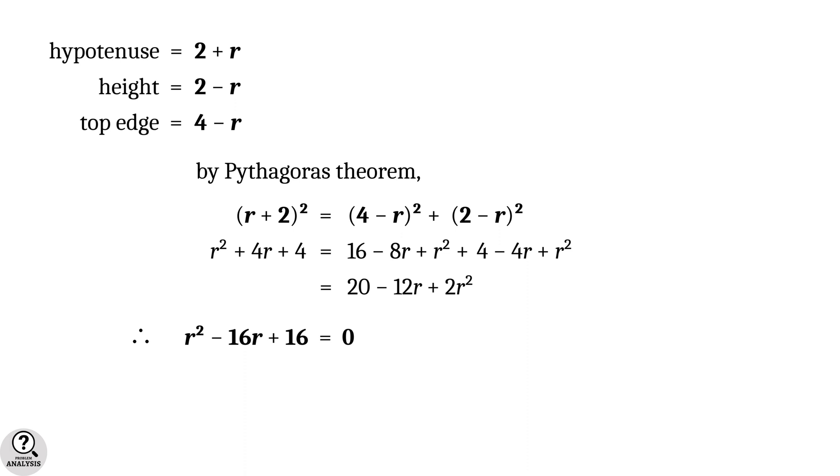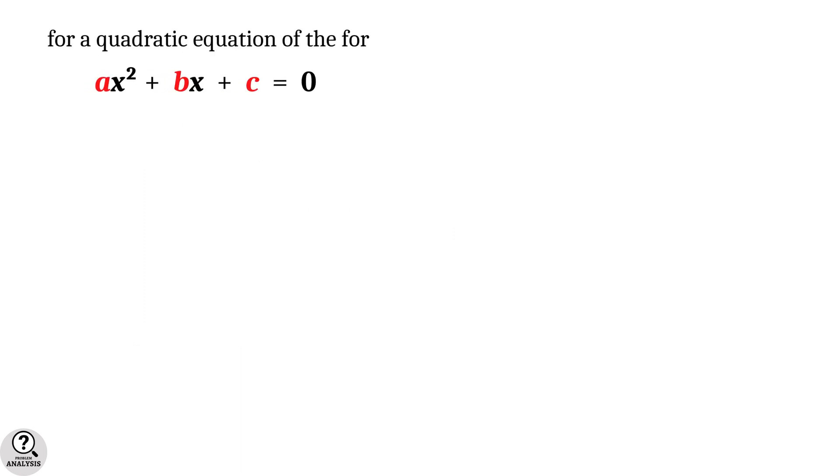By solving this equation, we will get the value of r. For a general quadratic equation of the form ax² + bx + c = 0, the general solution is given by the quadratic formula, which is x = (-b ± √(b² - 4ac)) / 2a.